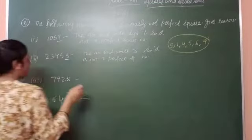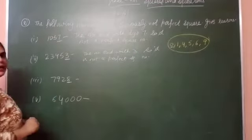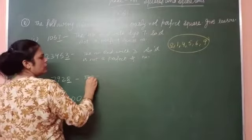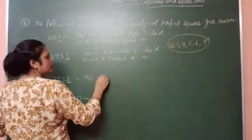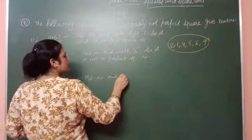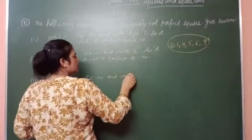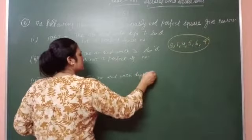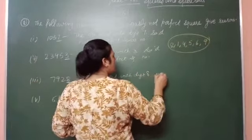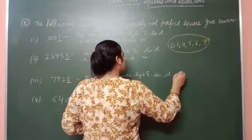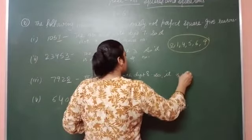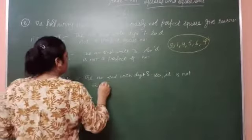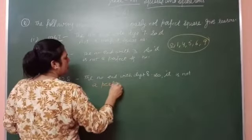Next, same as before. The number ends with 8. So it is also not a perfect square. Number ends with digit 8, so it is not a perfect square number.